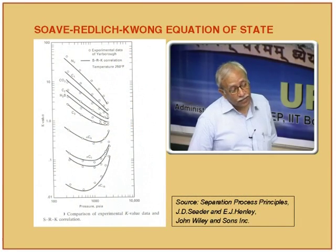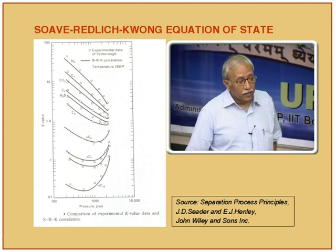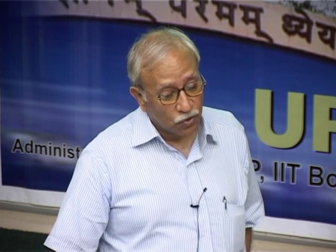Using the Soave-Redlich-Kwong equation, the continuous lines are the predicted values and the open circles are your experimental data. For a variety of components, the fits are very good all the way from pressures of the order of about 200 PSI up to about 2000 PSI. The pressure effect is very nicely captured, and when pressures are high, non-idealities are high, so K values are very nicely predicted. This shows that the applicability of Soave-Redlich-Kwong was quite widespread, all the way from light gases to fairly heavy hydrocarbons.